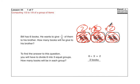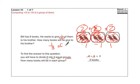To find the answer to this question, you will have to divide 6 into 3 equal groups. 6 divided by 3 — 6 books divided into my 3 groups. So 2 is equal to 1 third of 6. Notice where the 3 came from. If I want to find 1 third of 6, I simply do 6 divided by 3, because then I'm finding a third of it.